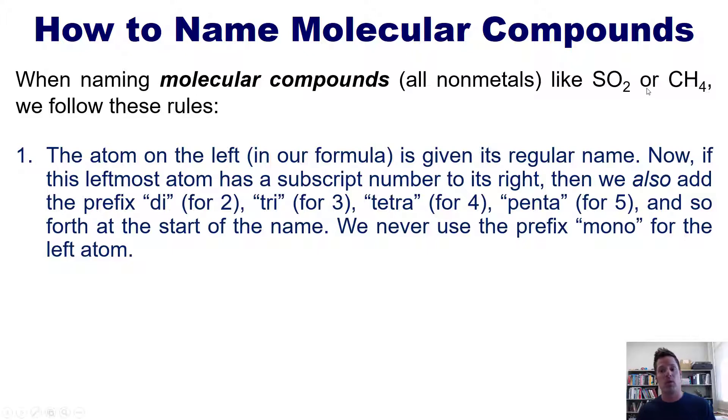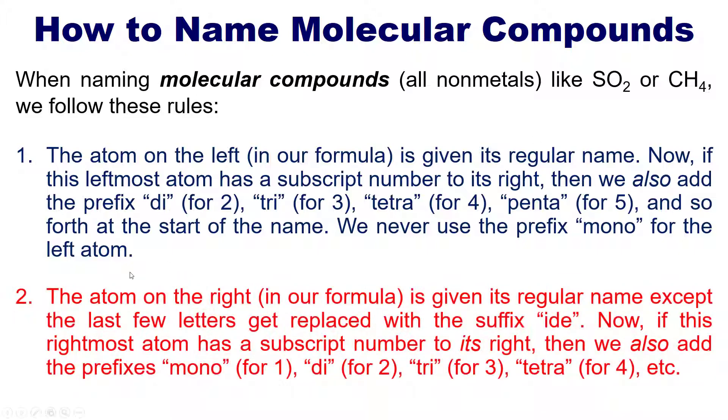Now, for the element on the right, we do use the word mono if we have an implied one next to it. Rule two: The atom on the right in our formula is given its regular name straight off of the periodic table, except that the last few letters get replaced with the suffix '-ide'.